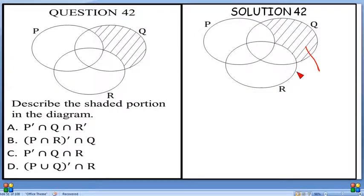So it is P prime because it is not inside P. Intersection Q because it is inside Q. Intersection R prime because it is not inside R.